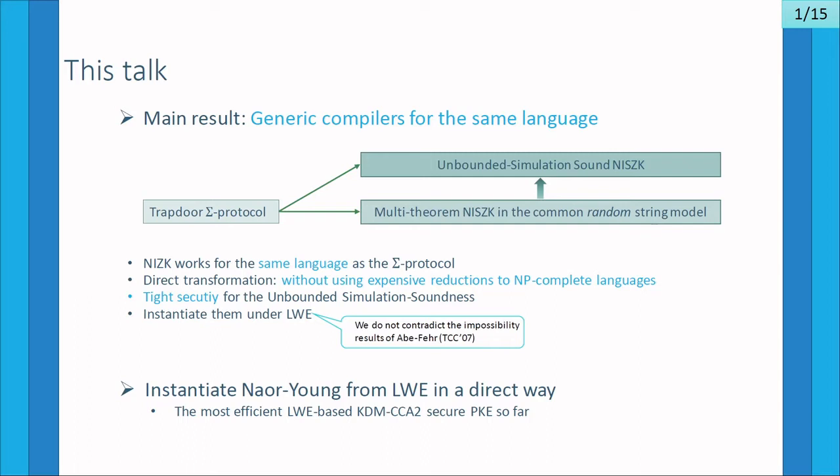Another result that we obtain using our compiler is that we can instantiate the Naor-Yung transformation under the learning with errors assumption in a direct manner. This gives us the most efficient LWE-based KDM CCA2 secure public key encryption that we know so far.